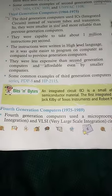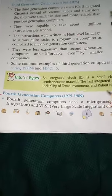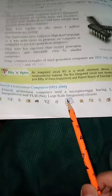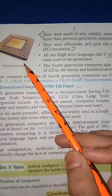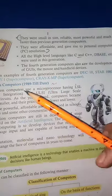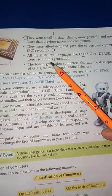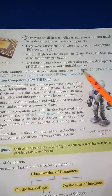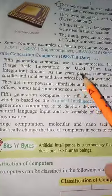जो fourth generation के computer हैं, वो 1975 से लेके 1988 तक रहे। इनमें microprocessor को use किया जाता था। यह size में smart और more powerful रहते थे, पिछली generation के computer के according, और बहुत affordable रहते थे। यह C++, C, और database management system जैसी languages को use करते थे।